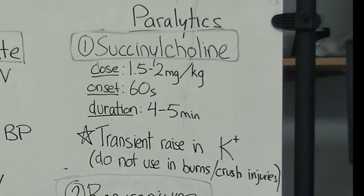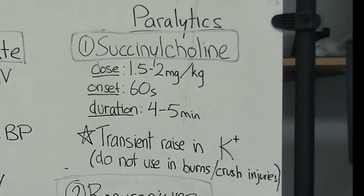Succinylcholine has a side effect profile that causes a transient rise in potassium. Patients on dialysis or patients with crush or burn injuries may be susceptible to increases in serum potassium. Another side effect is that it can cause malignant hyperthermia, so be sure to ask your patient if they have a prior history of malignant hyperthermia.